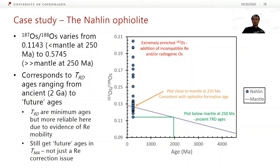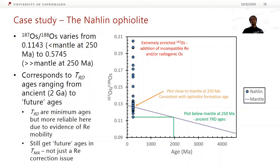In terms of the osmium isotopes, drawn in the same way as the previous plot — they vary from being much less radiogenic than the mantle at 250 million years ago to much more radiogenic. Looking at the most depleted one — the one with the lowest 187/188 osmium — doing a TRD age of that, we project backwards and actually get a TRD age of about 2 billion years old. So, again, we're seeing evidence of very, very old mantle being incorporated into this young oceanic lithosphere. The extremely radiogenic ones give meaningless future ages because you have to project the wrong way — it's still a minimum age, but it's mainly telling us that rhenium has been really messed up after these rocks formed. Some of the TMA ages also give future ages, telling us that rhenium must have been mobilized after the rocks were initially depleted.